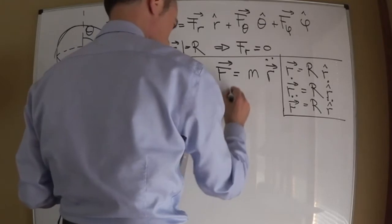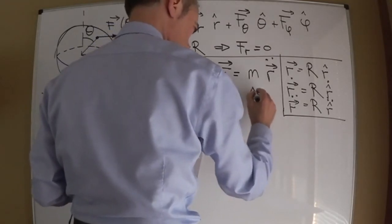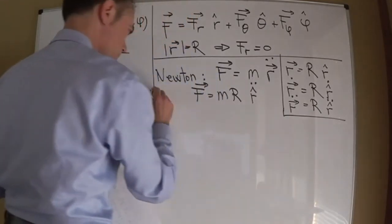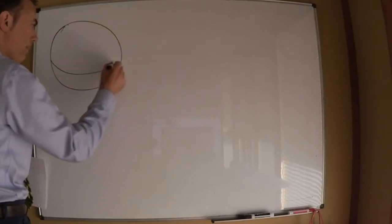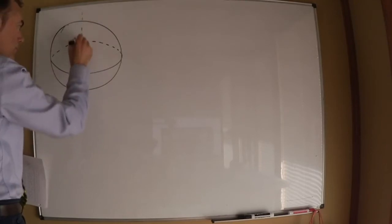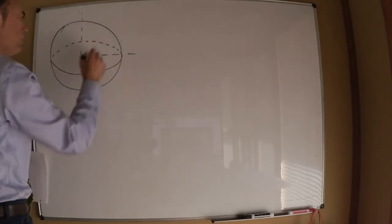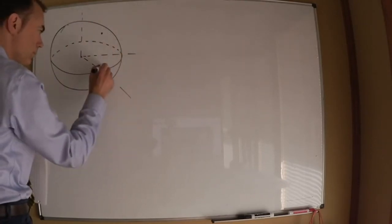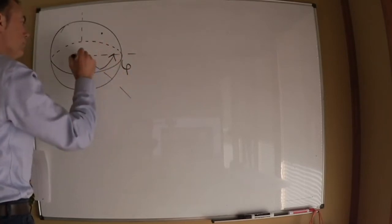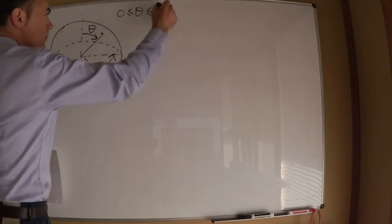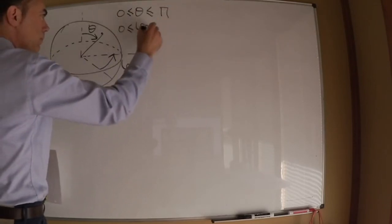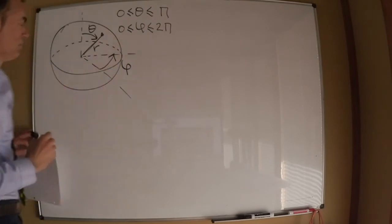Newton's second law is written as F equals m R r-hat-double-dot. This r-hat-double-dot needs to be written in terms of the unit vectors in spherical coordinates. We first need to relate Cartesian coordinates with spherical coordinates. R is the distance of the particle to the origin. Theta is the angle from the vertical z-axis, going from zero to pi. Phi is the angle on the xy-plane and goes from zero to two pi.